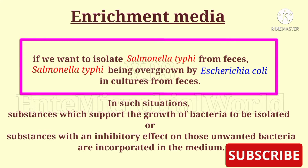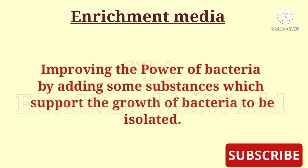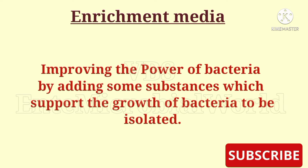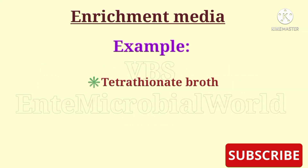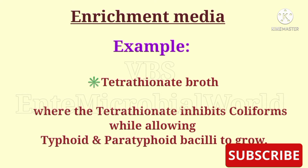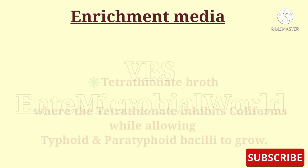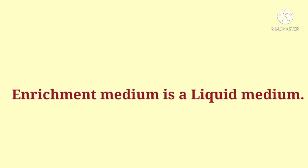In such a situation, substances which support the growth of the bacteria to be isolated, and substances with an inhibitory effect on those unwanted bacteria, are added — and so we use enrichment media. For example, tetrathionate broth, where the tetrathionate inhibits coliforms while allowing typhoid and paratyphoid bacilli to grow. Another example is selenite F broth. Enrichment medium is a liquid medium.